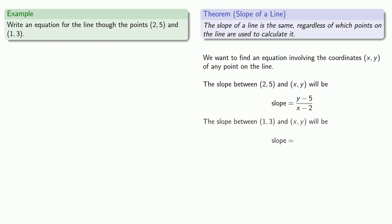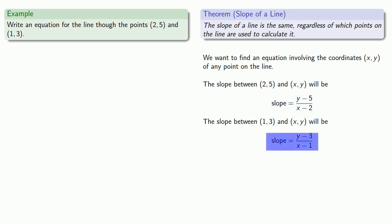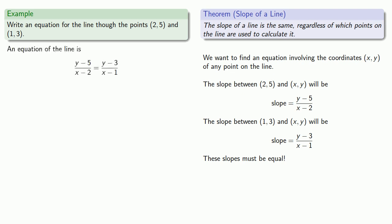We can also calculate the slope between another known point and (x, y). Something Descartes noted is very useful here: any time we get two different expressions for the same thing, we can put them together to form an equation. We have one expression for the slope and another expression for the slope, and our theorem says the slopes must be equal since they're four points on the same line — so we set the two expressions equal to each other to get an equation for the line.